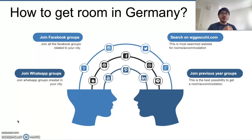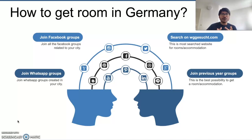And the most important tip I am going to give you, which will ensure that you find a room easily, is to join previous year groups. By previous year groups I mean the course which you are going to — you will be joining that particular year group, but all those people would also be requiring a room.